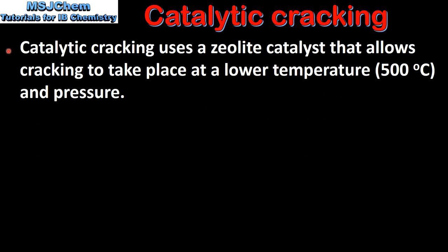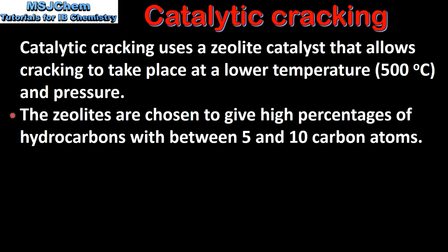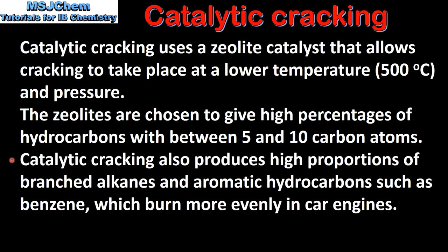Catalytic cracking uses a zeolite catalyst that allows cracking to take place at a lower temperature and pressure. The zeolites are chosen to give high percentages of hydrocarbons with between 5 and 10 carbon atoms. Catalytic cracking also produces high proportions of branched alkanes and aromatic hydrocarbons such as benzene, which burn more evenly in car engines.